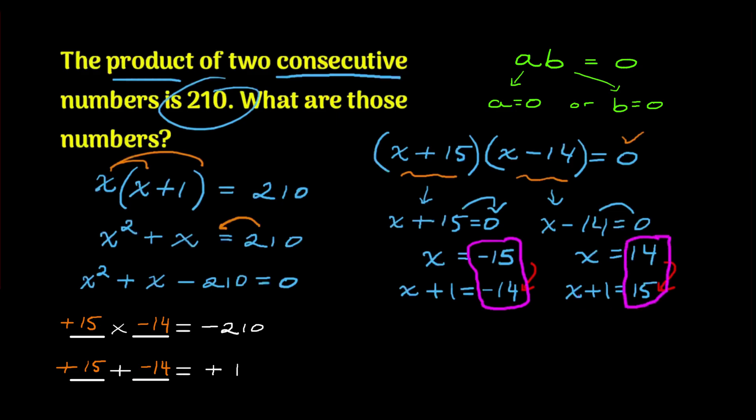So these two combinations of answers are my final answer to the problem. One is going to be negative 15, negative 14. And the other is going to be 14, 15. That is how you solve the product of two consecutive integers. I hope you enjoyed it. If you did, it would mean a lot to us if you left a like, commented, subscribed, and we will see you in the next one. Peace.